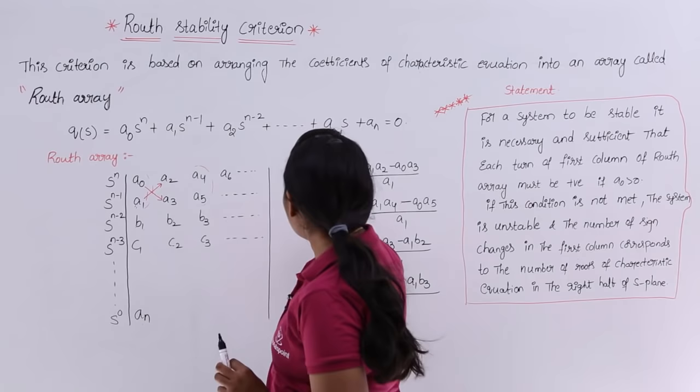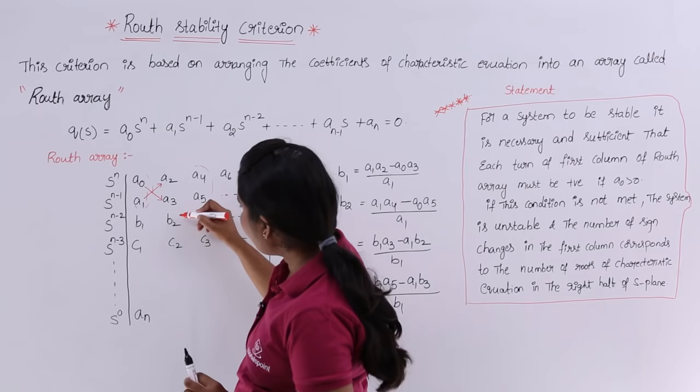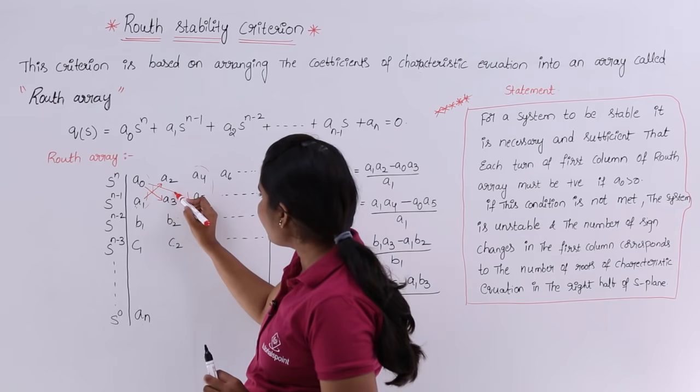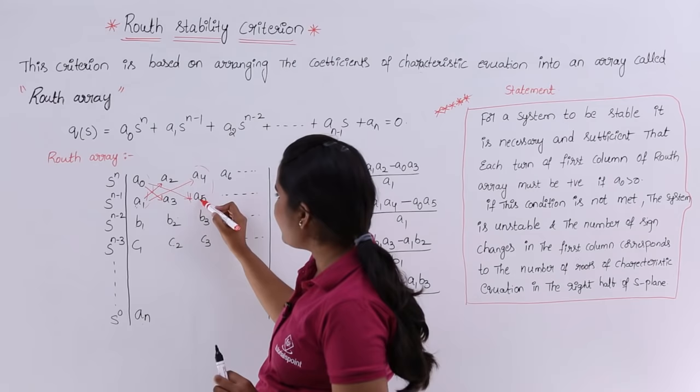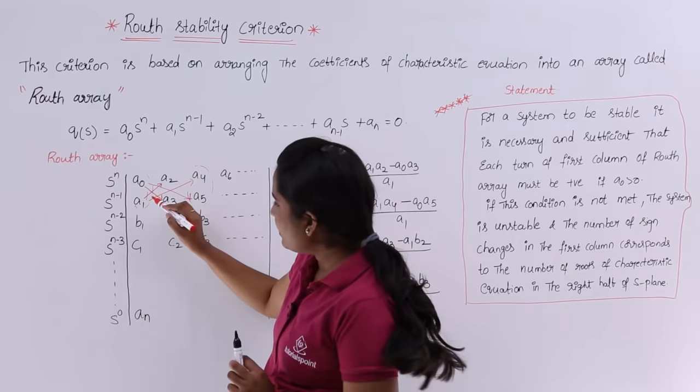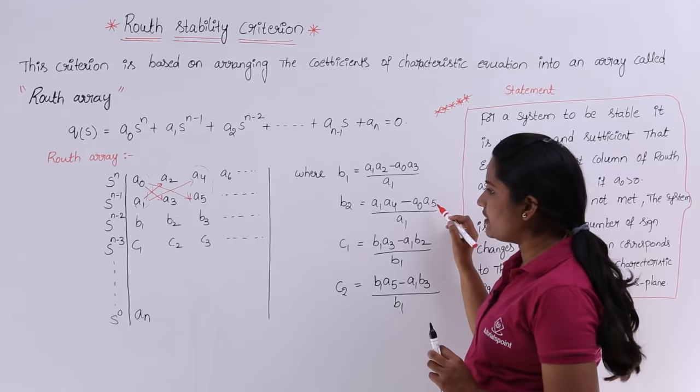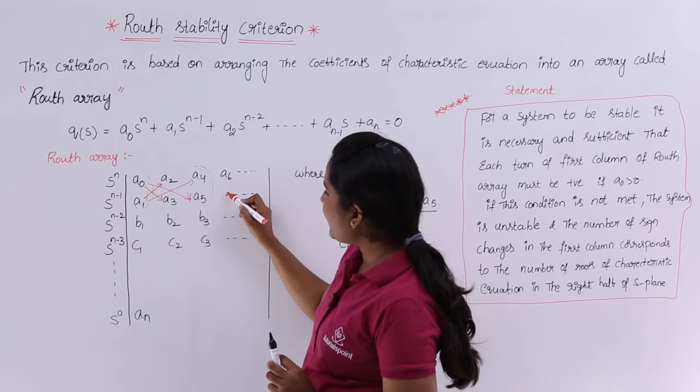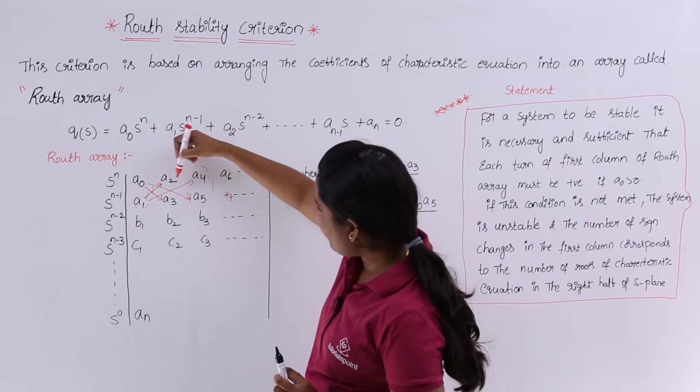To get b₂, you use the first two column elements a₀ and a₁, and cross elements a₄ and a₅, giving: (a₁·a₄ − a₀·a₅) / a₁. For b₃, if you have a₇, the formula becomes: (a₁·a₆ − a₀·a₇) / a₁. So all b-row elements are divided by a₁.